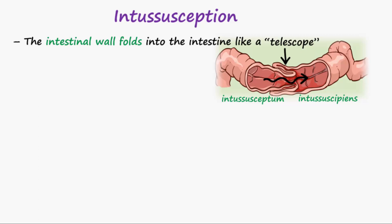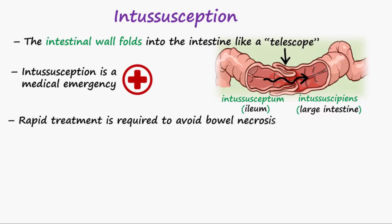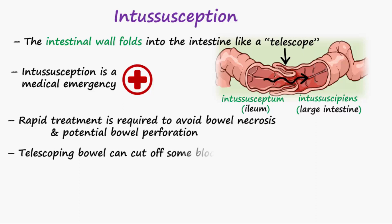Most cases are ileocolic, where a portion of the ileum telescopes into the large intestine. Intussusception is a medical emergency requiring rapid attention to avoid bowel necrosis and potential bowel perforation. If intussusception is not treated, the telescoping of the bowel can cut off some of the blood supply to the bowel and lead to ischemia of intestinal mucosa.